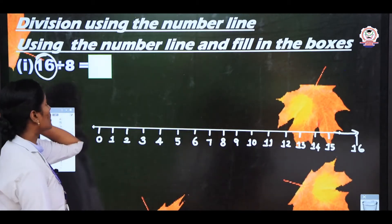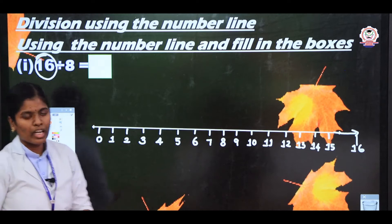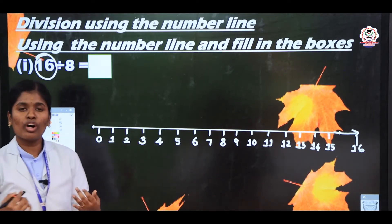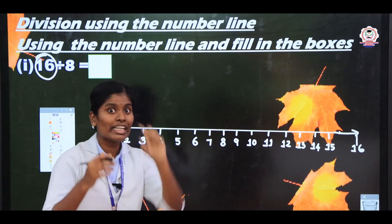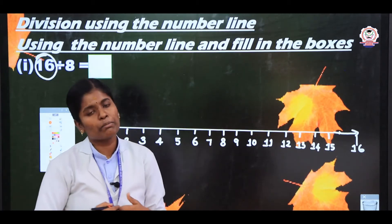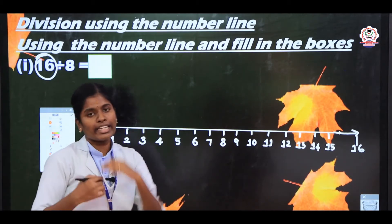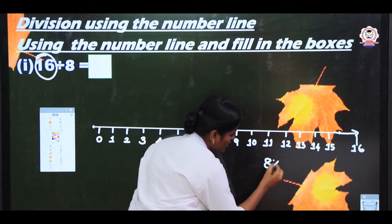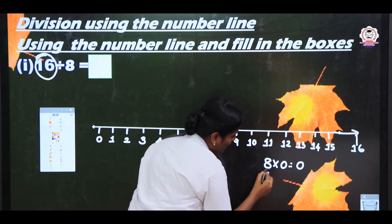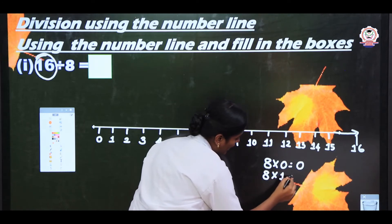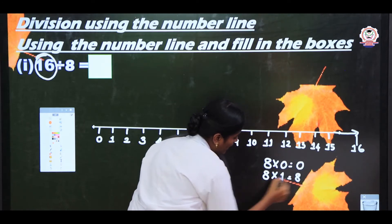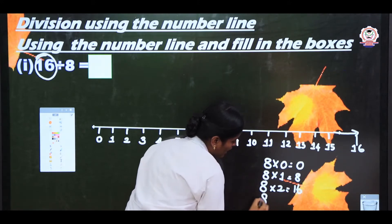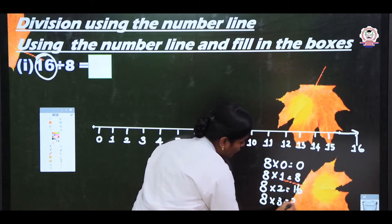Now, the dividend value is 16 and the divisor value is 8. The divisor value tells us which table to use. We have the 8 times table here: 8 zeros are 0, 8 ones are 8, 8 twos are 16, 8 threes are 24.